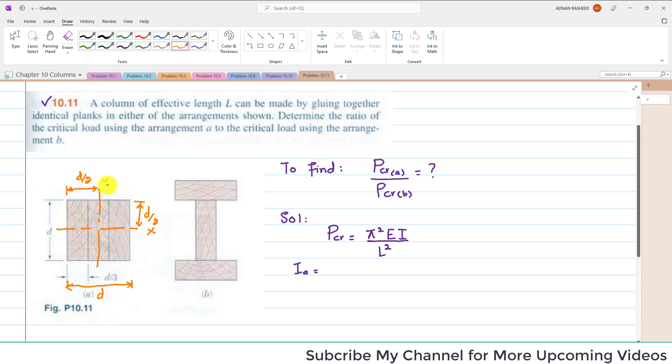If this is the x-axis and this is the y-axis, the moment of inertia about x-axis or y-axis will be the same. I will take the moment of inertia of the cross-section of A about y-axis, which equals 1/12 times D⁴.